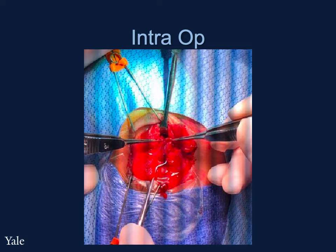Attention was directed to the right inferior rectus, which was noted to have a full thickness transection 14 mm from its insertion site. Blunt dissection using Westcott scissors was performed inferiorly to identify the distal end of the inferior rectus, which was found to be quite fragile and macerated, as can be seen in this photograph. Using 6-0 double-armed Vicryl suture in a horizontal mattress pattern with double locking bites, what remained of the inferior rectus muscle was sutured together. The inferior oblique was noted to be intact and at its appropriate insertion.